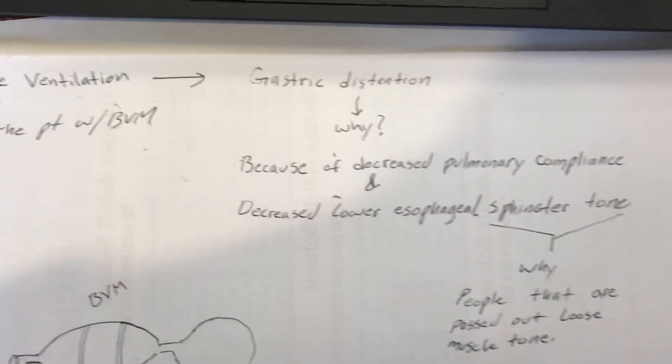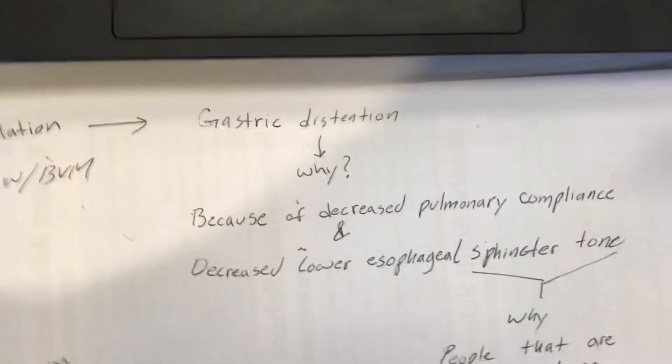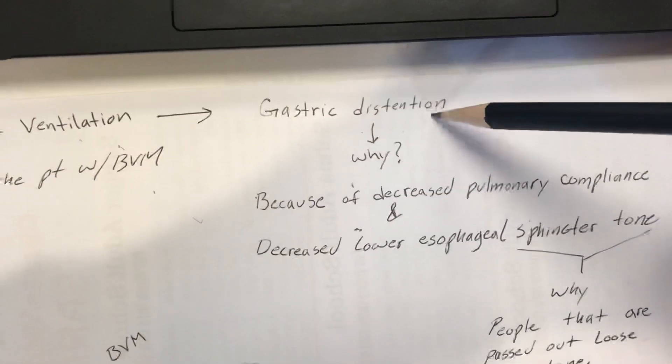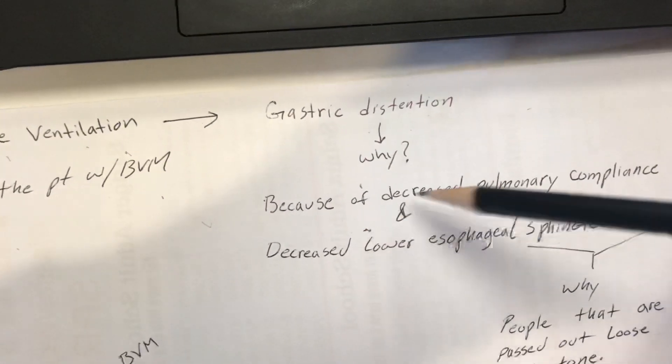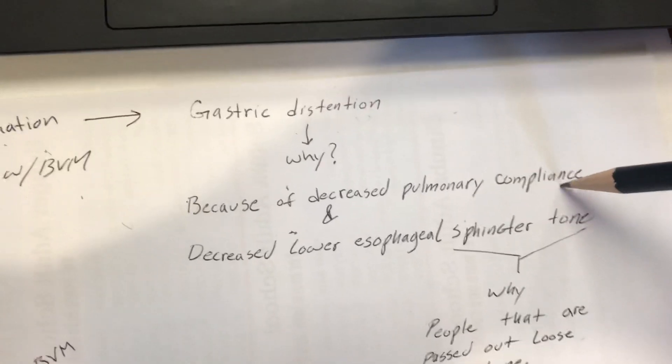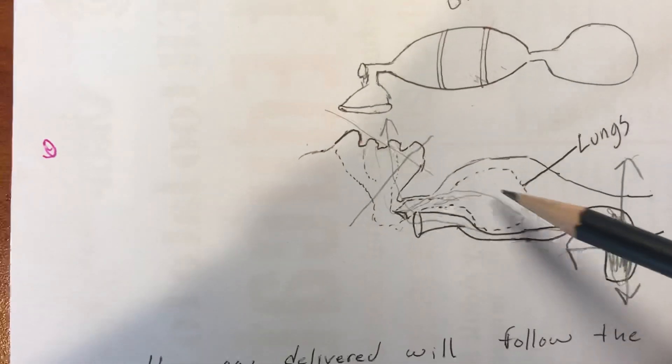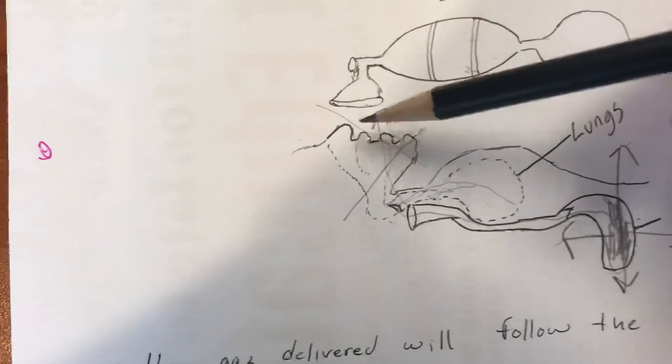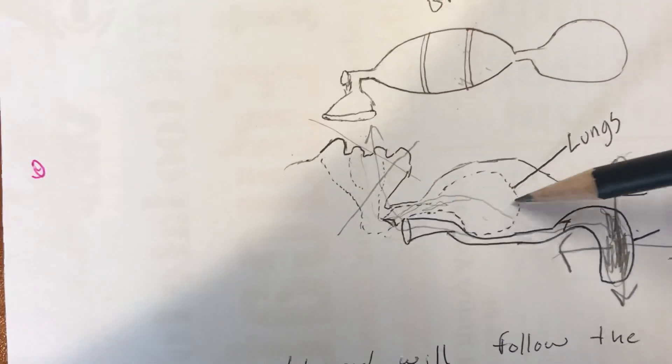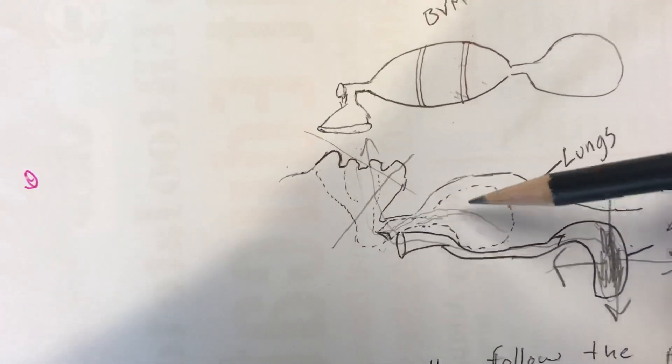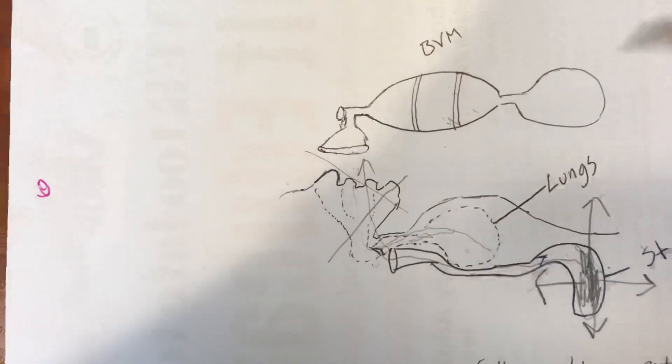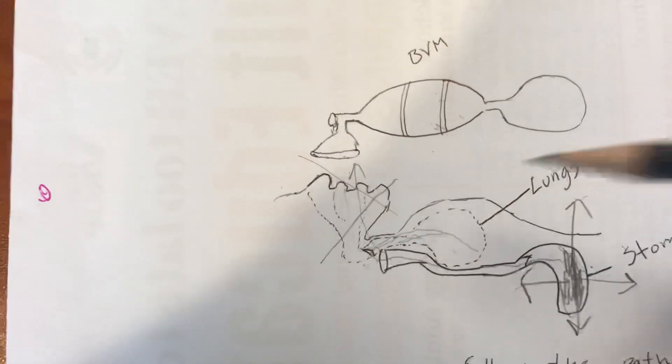So gastric distension - why does it occur, how does it occur? Because of decreased pulmonary compliance. Because this patient's body is no longer functioning, now you have to force air into the lungs, and the lungs aren't going to accept all that air as if the patient was breathing, because you're forcing air into the system.